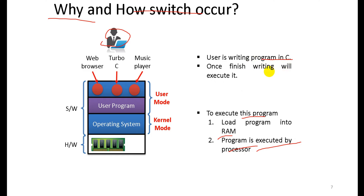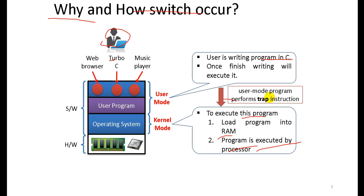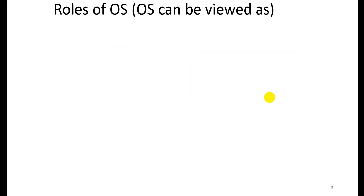For example, you write the program in C with Turbo C. Turbo C is itself a program. When executed, a signal is generated and the processor executes the program. The user mode program then performs a trap instruction, which causes a switch from user mode to kernel mode.